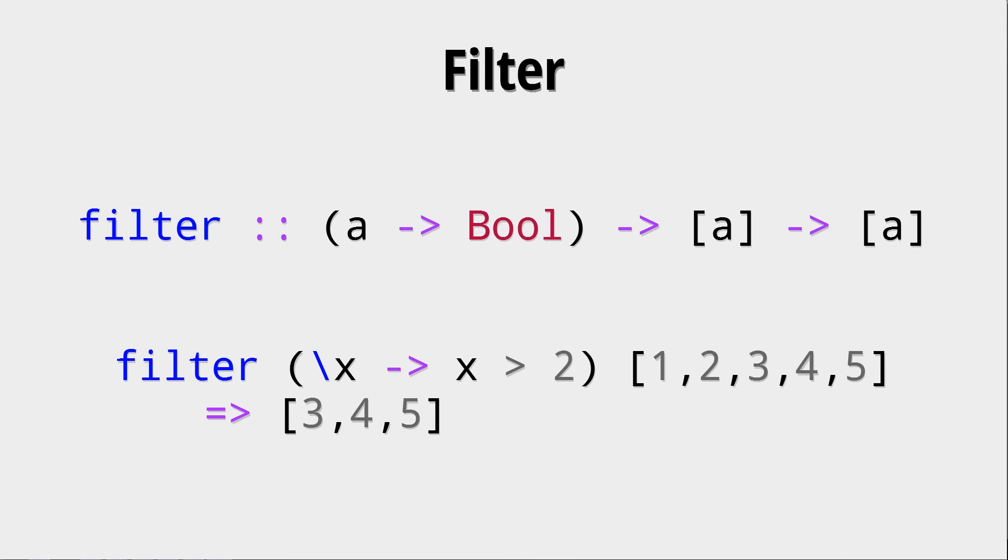Here for example we can filter all the numbers that are smaller than 2. The important thing is that when the predicate returns true, then the element will be in the new list. Don't think of it as if it's true then it's filtered out - it's the other way around.